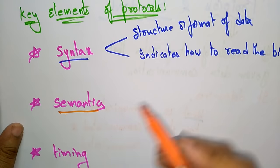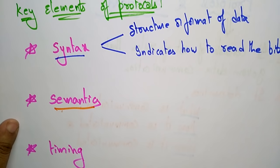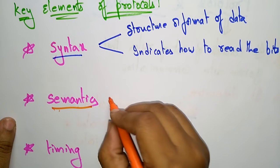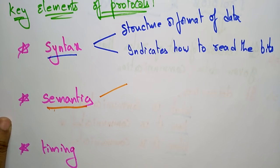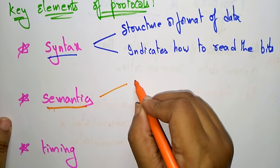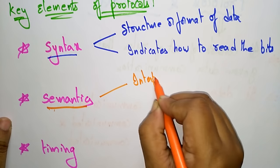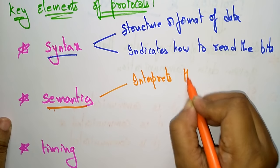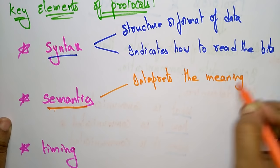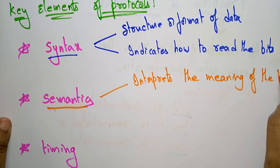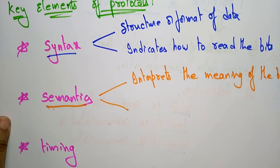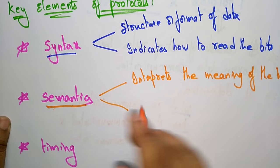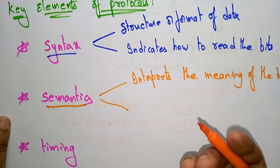Semantics is nothing but it interprets the meaning of the bits. So while syntax tells us how to read the bits, semantics is helpful in interpreting the meaning of the bits. It also indicates which field defines what action.